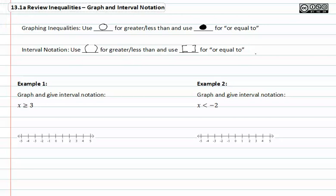In example one, we need to graph and give interval notation for x greater than or equal to three. First, we need to find three. Since it's greater than or equal to, we need to use a closed dot.